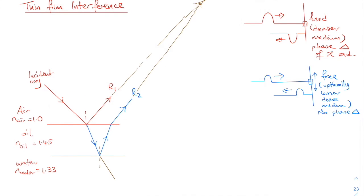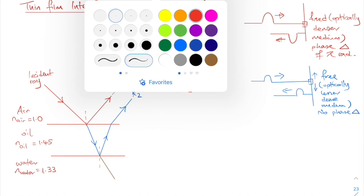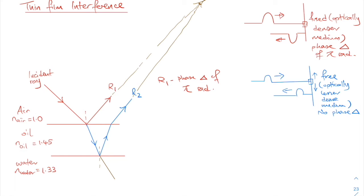So let's analyze the two boundaries. At the first boundary, where light enters from an optically less dense medium into an optically denser medium, it experiences a phase change — ray R1 experiences a phase change of π radian. For R2, it moves from an optically denser into an optically less dense medium, so this ray does not experience any phase change.